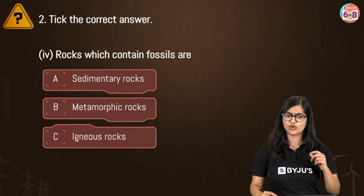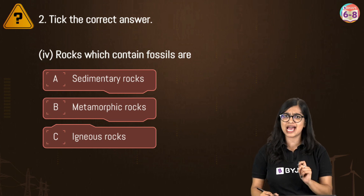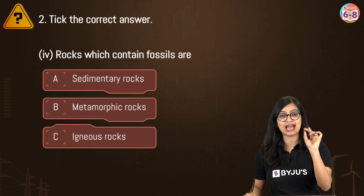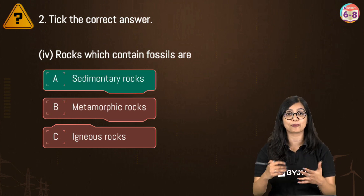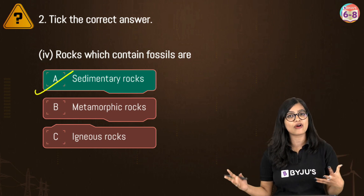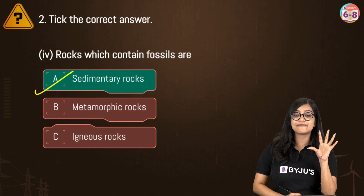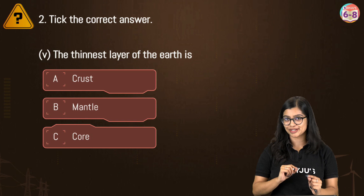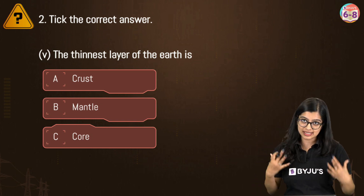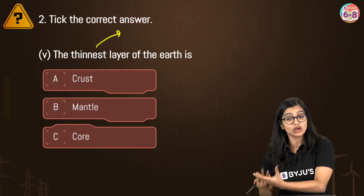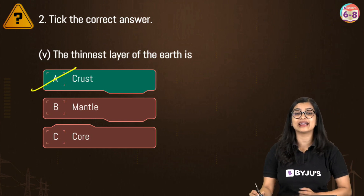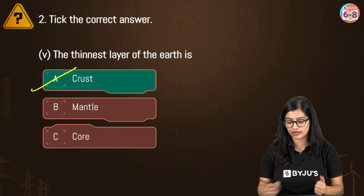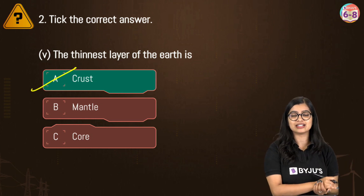Fourth MCQ: rocks which contain fossils are called — sedimentary, metamorphic, or igneous rocks? Among the three types, only sedimentary rocks contain fossils, which we don't find in metamorphic or igneous rocks. Correct answer is option A, sedimentary rocks. Fifth MCQ: the thinnest layer of the earth is the crust, which is also the outermost layer. A large portion is covered by the mantle, and then the innermost core. Answer is crust.